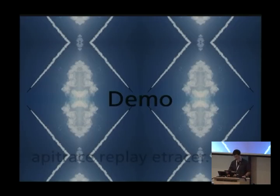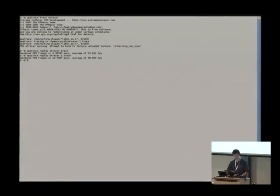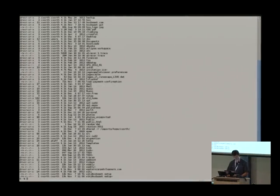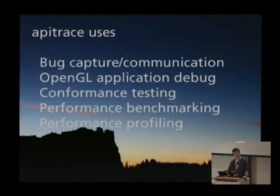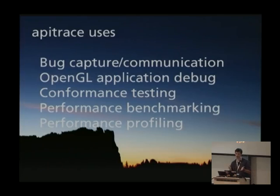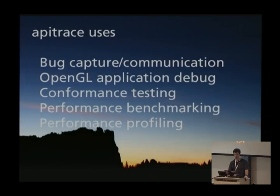That was cool, but what's the point? Why would anyone care? There are five different reasons why API Trace is interesting: one is to capture bugs for bug reporting and communication; one is for debugging an application; then doing conformance and performance testing; benchmarking; and performance profiling. I'm going to go through each one of these — that's really the outline of the rest of my talk.